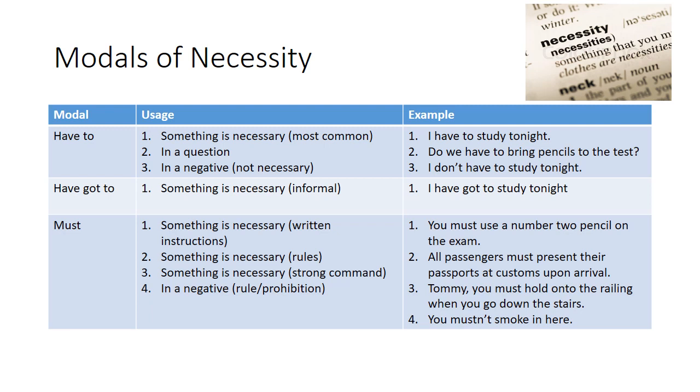We have three different modals of necessity: have to, have got to, and must. We'll notice that some of them are used the same way but there's a slight difference in the meaning when you use them. So let's look first at have to. We'll see that there's three usages of have to. The first one is when something is necessary, the second one is in questions, and the third one is in negatives.